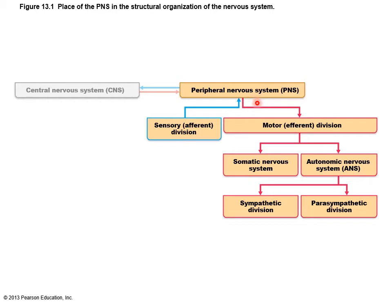The peripheral nervous system provides two-way communication to and from the brain. All of the neural structures are outside the brain. You have receptors bringing information in through the sensory afferent division, then you have your peripheral nerves and motor endings — your incoming afferent pathway and your motor efferent division.